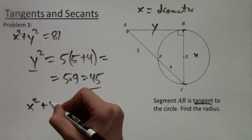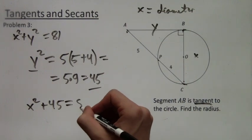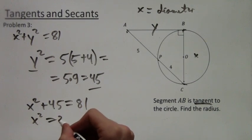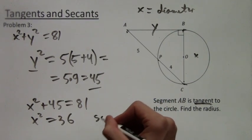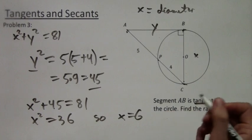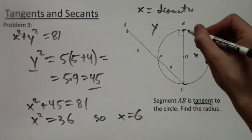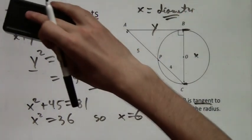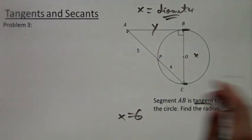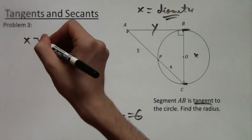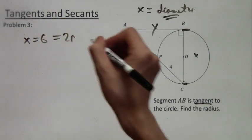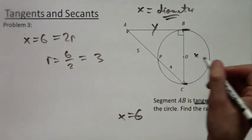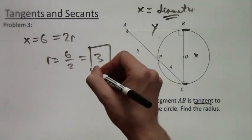So I replace y squared with 45, and we get x squared plus 45 equals 81. So x squared equals 81 minus 45 is 36. And we take the square root, and x equals 6. But we're not quite done. Remember, x was the entirety of BC. It's the diameter. What we want is OB or OC, or in other words, half of x. So the radius is half of that. We divide 6 by 2, and we get 3. So the radius of the circle is 3. And that concludes the problem.